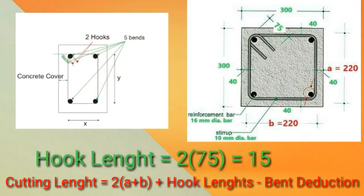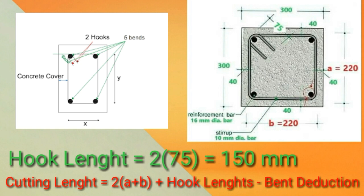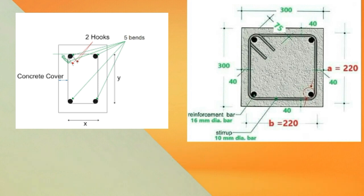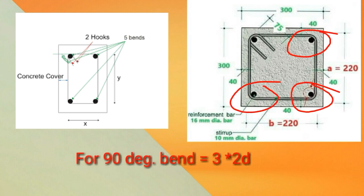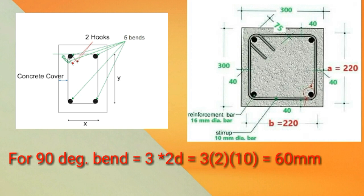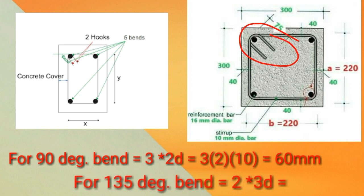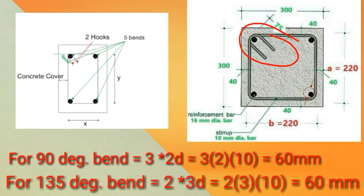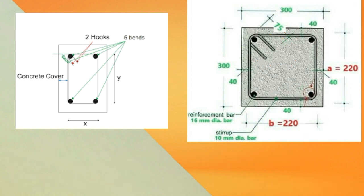For the hook length, since there are two 135 degree hooks, we multiply 2 times 75, giving a total hook length of 150 millimeter. For bend deduction on the 90 degree bends, since there are three pieces, we multiply 3 times 2d, which is 3 times 2 times 10, equal to 60 millimeter. For bend deduction on the 135 degree hooks, since there are two, we multiply 2 times 3d, which is 2 times 3 times 10, equal to 60 millimeter. Therefore the total bend deduction is 120 millimeter.